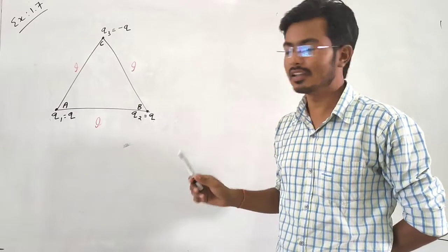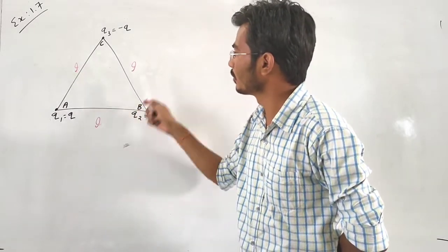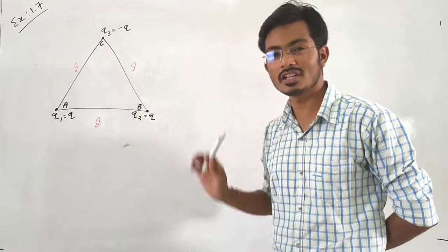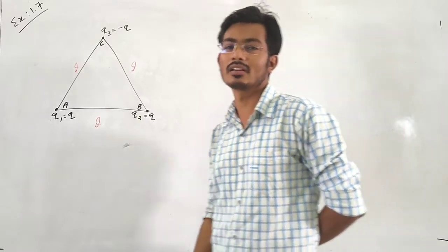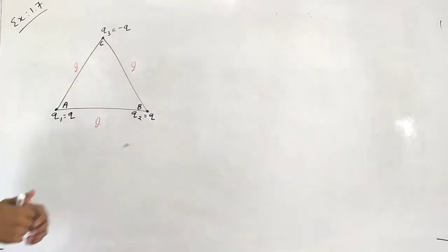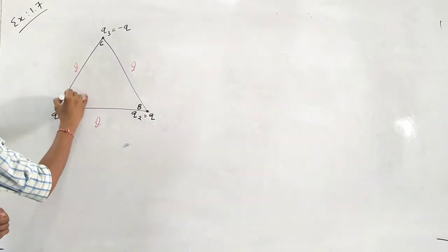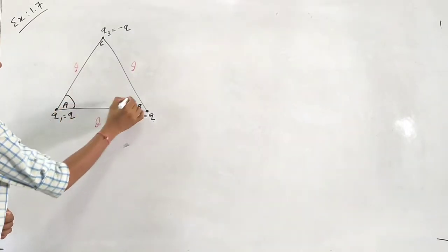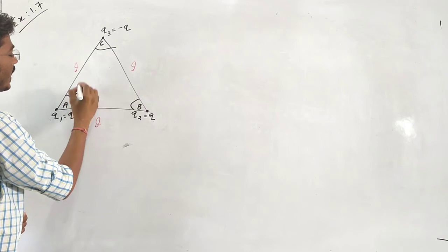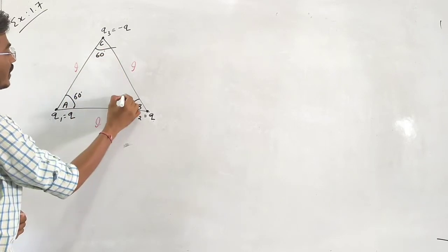It is an equilateral triangle because all the lengths are the same. As we know, in an equilateral triangle all angles are 60 degrees — each and every angle is 60 degrees.